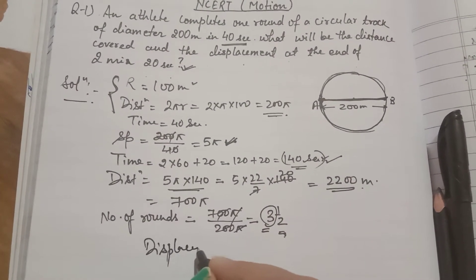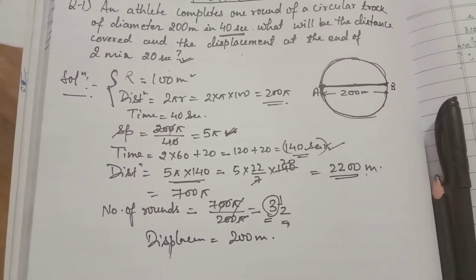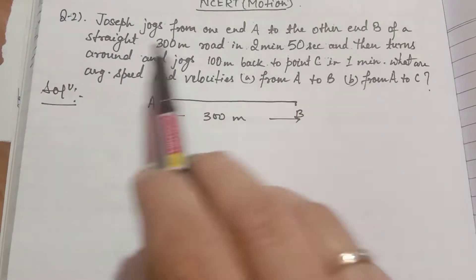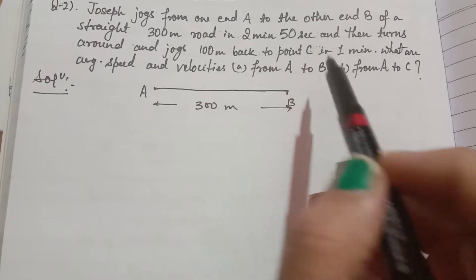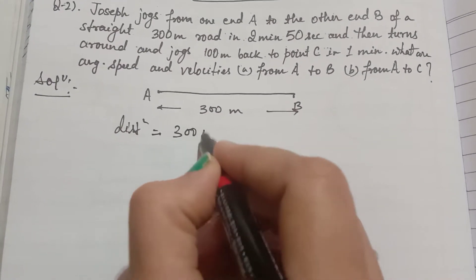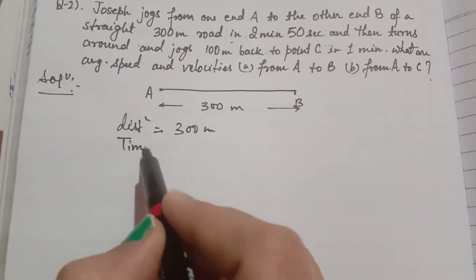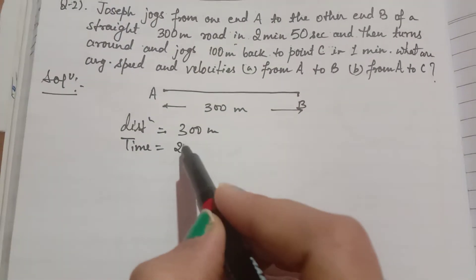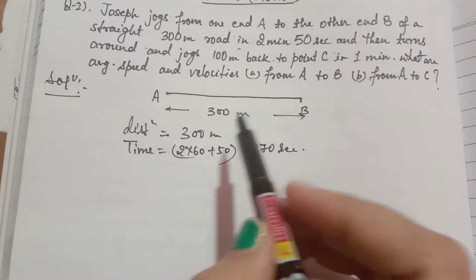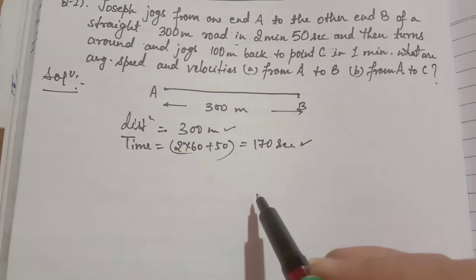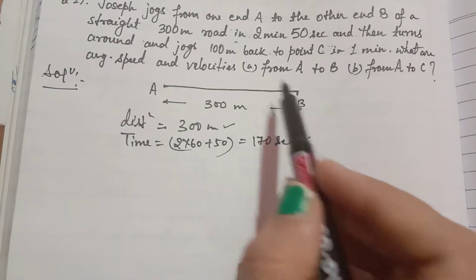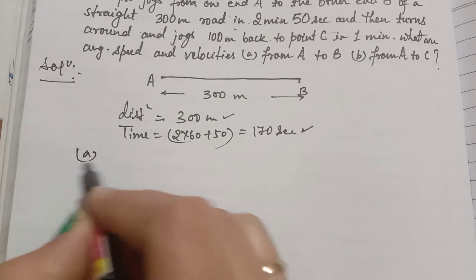Now the second question: Joseph jogs from one end A to the other end B of a straight 300-meter road in 2 minutes 50 seconds. Distance is 300 meters. Convert the time: 2 × 60 + 50 = 170 seconds. The question asks for average speed and velocity from A to B, and from A to C. First find the average speed from A to B.